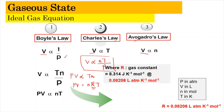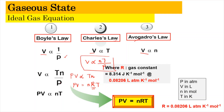We can bring the P term to the volume side so that we get PV directly proportional to Tn. We can make an equation by converting the proportionality sign into an equal sign, and we add a gas constant R. That is why we get PV = nRT, where R is the gas constant with two values: 8.314 J per K per mol, or 0.08206 L·atm per K per mol.